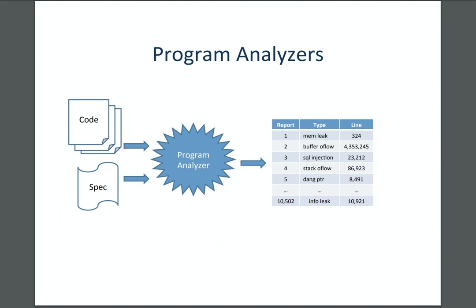High-level overview: imagine you're an engineer at Google or Facebook committing a new feature and you want to make sure you didn't expose a null pointer error or a buffer overflow. You have your code and some specification of what it's supposed to do, you give it to your magic program analyzer, and you get a report about potential vulnerabilities. Nowadays big software engineering shops run these program analysis tools automatically, integrated with the build system on every commit.